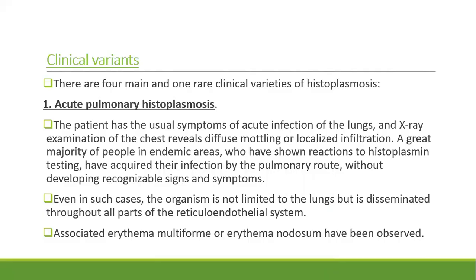There are four main and one rare clinical variety of histoplasmosis. The most common is acute pulmonary histoplasmosis, where the patient has usual symptoms of acute lung infection and chest X-ray reveals diffuse and localized infiltration. A great majority of people in endemic areas who have shown reaction to histoplasmin testing acquired their infection by pulmonary route without developing recognizable signs and symptoms. Even in such cases, the organism is not limited to the lung but is disseminated throughout the reticuloendothelial system. Associated erythema multiforme and erythema nodosum can occur.